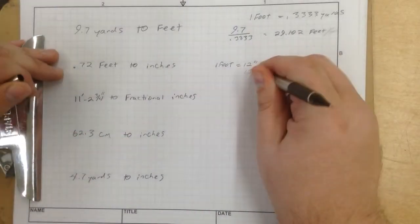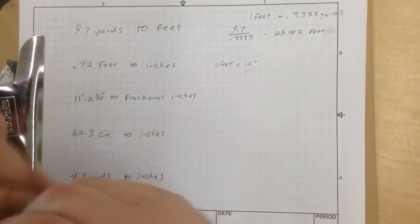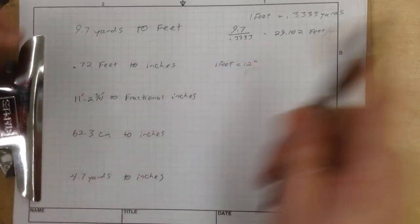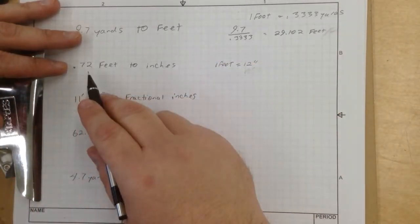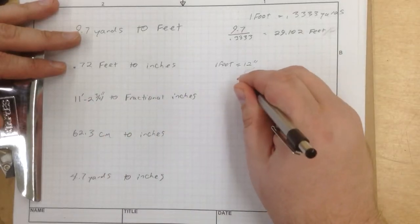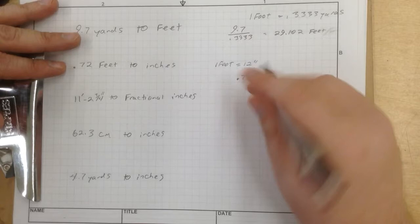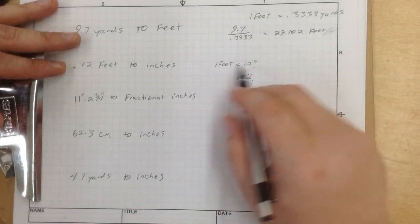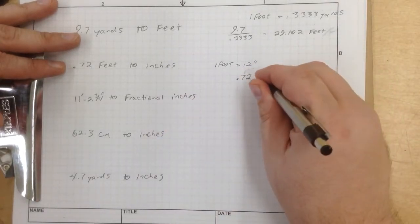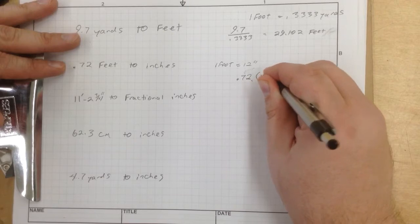So 0.72 feet to inches. Okay, let's check this out. 0.72. So we've got 0.72 of a foot. We need to get that to inches.